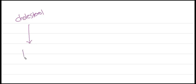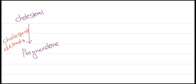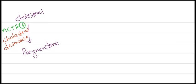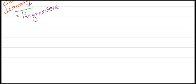In the cholesterol-to-cortisol synthesis pathway, cholesterol is first converted into pregnenolone by an enzyme called cholesterol desmolase. This reaction is under the influence of ACTH (adrenocorticotropic hormone), and a negative feedback from decreased cortisol levels induces this reaction.